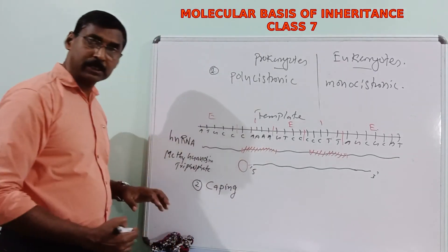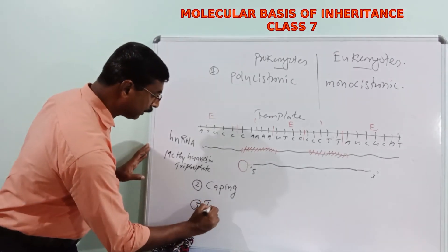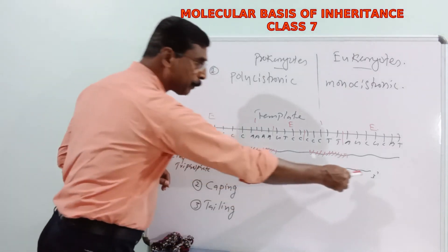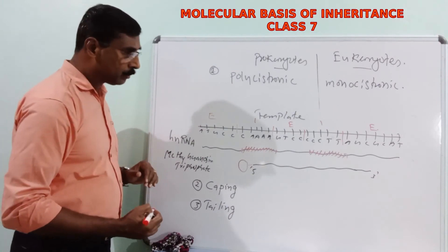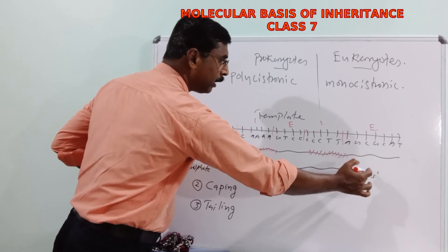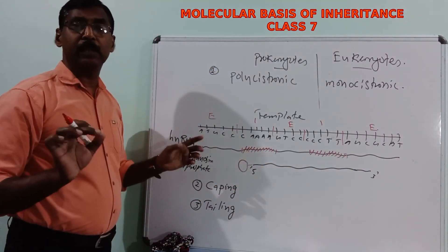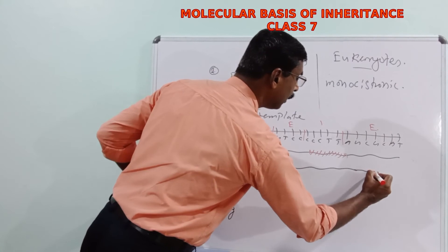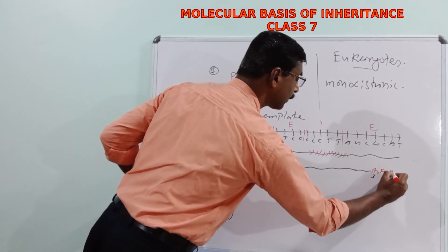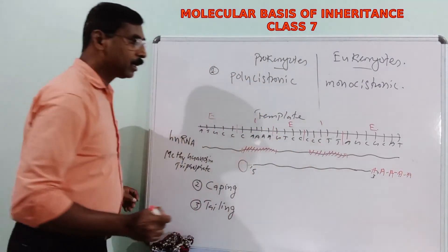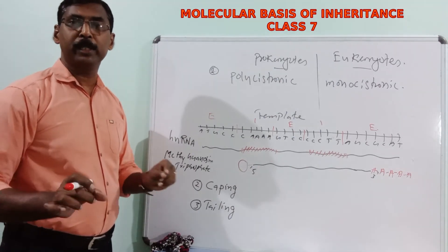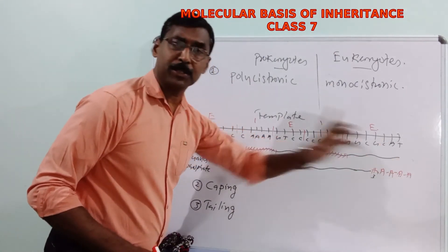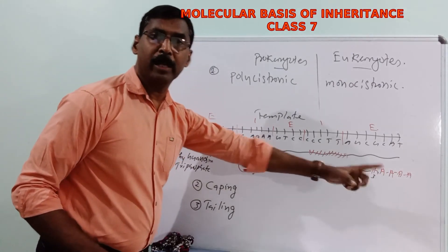The third post-transcriptional change is tailing. At the 3 prime end — the tail — of the HnRNA, a polyadenylate sequence is added. This means repeated adenine sequences ranging from 200 to 300 adenine base pairs are added at the 3 prime end of the HnRNA.